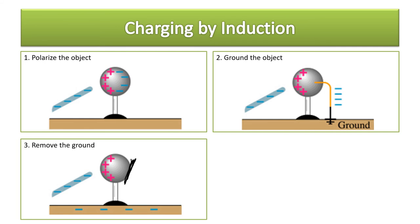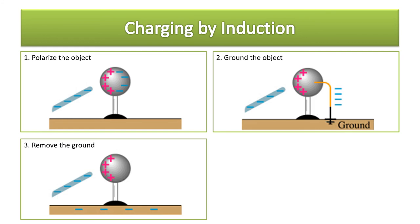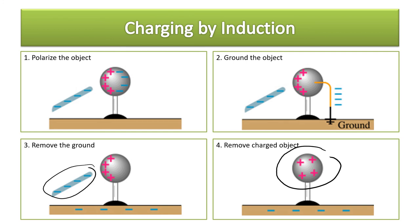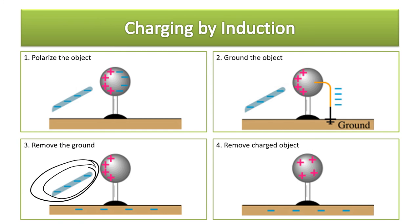There's no path for the electrons to come back into the metal sphere now. The students are in the hallway, doors are shut, and then you remove the charged object. The overall effect: this neutral object lost electrons and became positive from a negatively charged object. So it is possible to give an object a positive charge from a negatively charged object if you ground it — then you can charge it by induction.